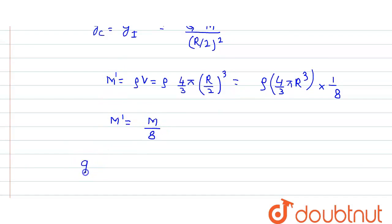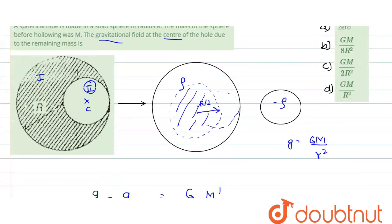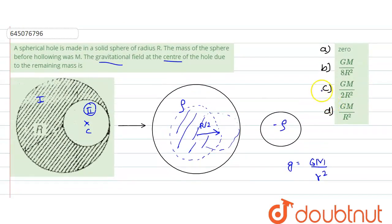Substituting, the gravitational field at the center is g = G·(M/8) / (R/2)² = G·(M/8) / (R²/4) = GM / 2R². So the correct answer is GM / 2R².